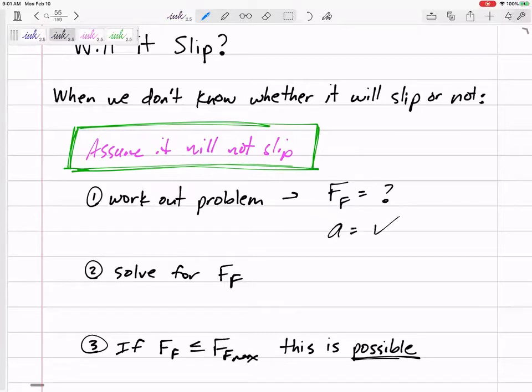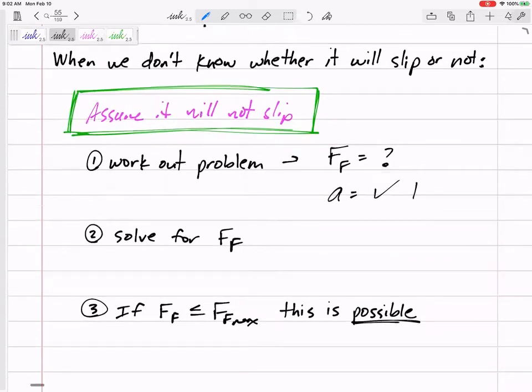But the acceleration - I'm going to put a check mark there - because many times that means the acceleration is zero, or it means the acceleration of B equals the acceleration of A if they're not slipping past each other. So you know something about the acceleration.